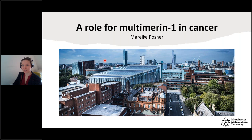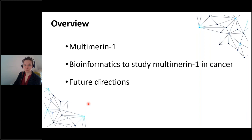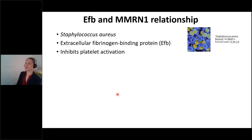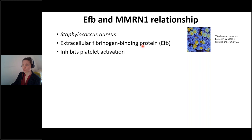Thank you very much for the introduction and the opportunity to share some of the work we have been doing on multimerin-1 in cancer. In my talk, I will introduce you to the protein multimerin-1 and why we are studying it, how we did the bioinformatics to explain its role in cancer, and I will conclude with future directions. How we originally got interested in multimerin-1 came through our research in Staphylococcus aureus pathogenicity. S. aureus is a formidable pathogen that uses an arsenal of proteins to aid infection by evading the immune system response.